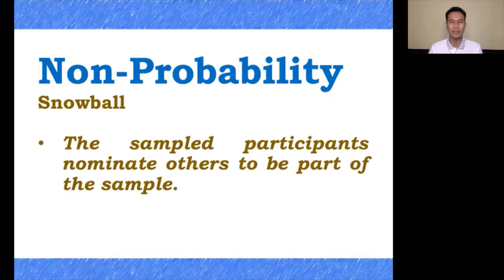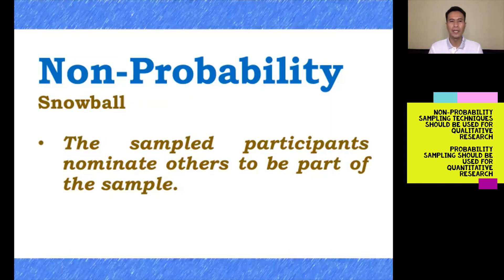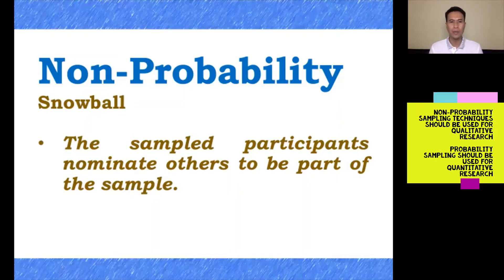The first participant can nominate another participant for your research. That is snowball sampling technique. Remember, this is non-probability sampling, and non-probability sampling will be used for qualitative research, while probability sampling will be used for quantitative research. Please take note: non-probability sampling techniques should be used for qualitative research.